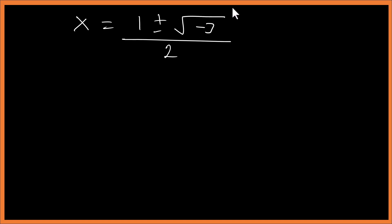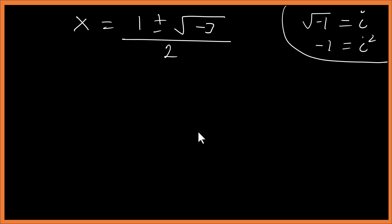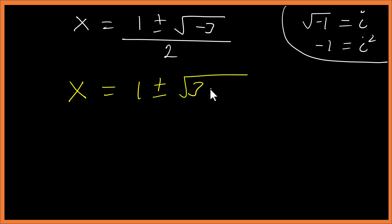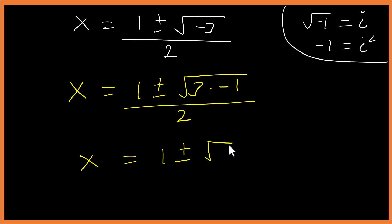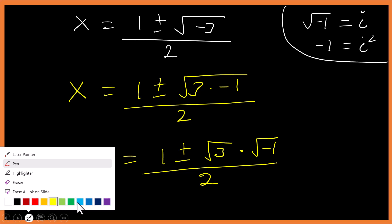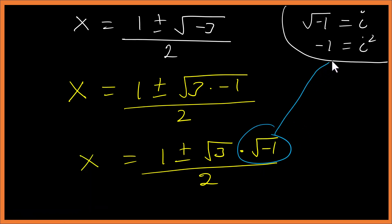Since we have a square root of a negative number, this becomes complex. Recall that the square root of negative one equals i. So we can write the square root of negative three as the square root of three times the square root of negative one, which equals the square root of three times i. Therefore x equals one plus or minus i times the square root of three, over two.